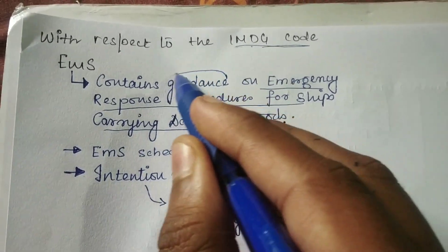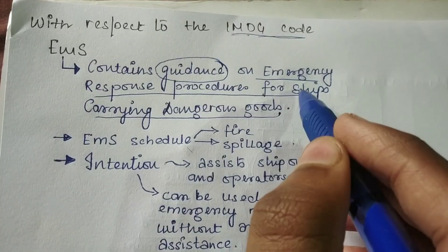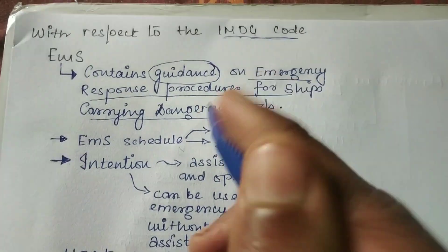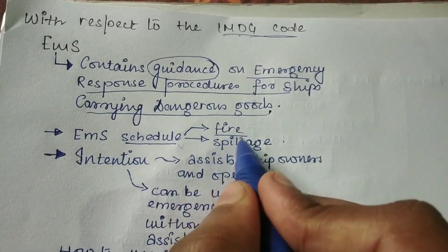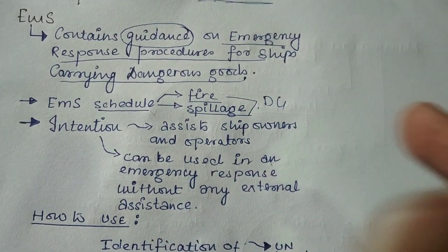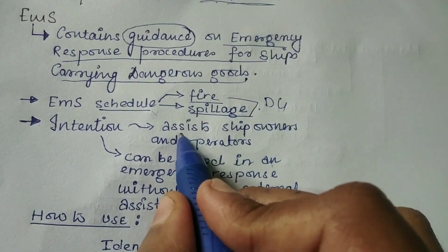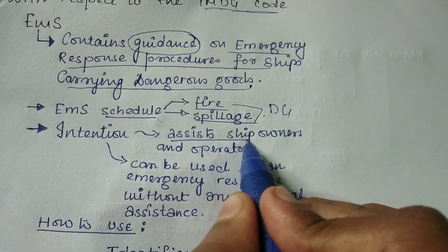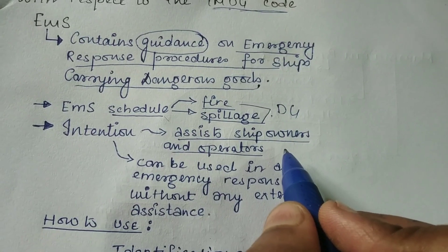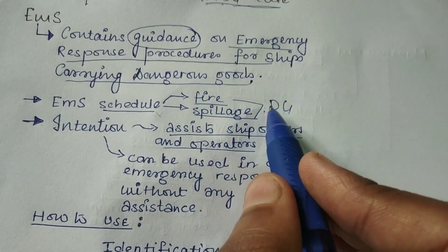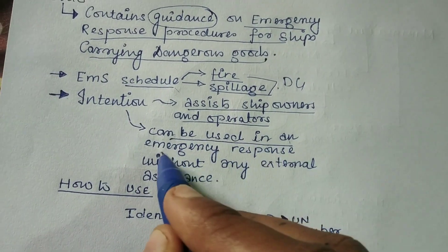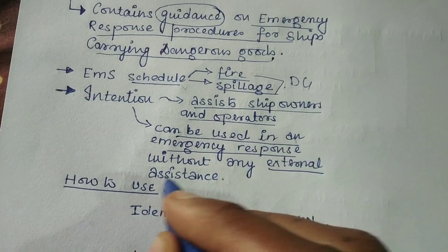It basically carries the guidance of what to do in case of an emergency for ships carrying dangerous goods. The EMS schedules cover fire and spillage of dangerous goods. It is needed to assist ship owners and operators to guide the crew on how to operate in case of an emergency involving dangerous goods. It can be used for emergency response without any external assistance.